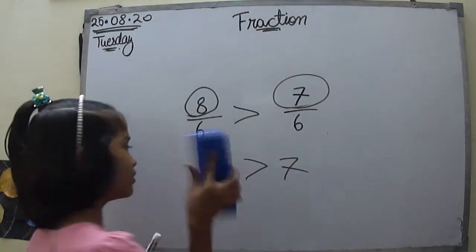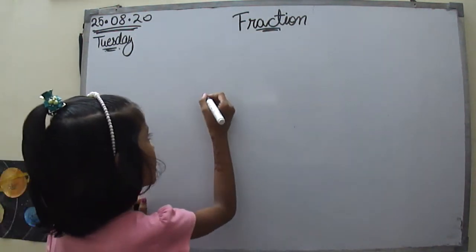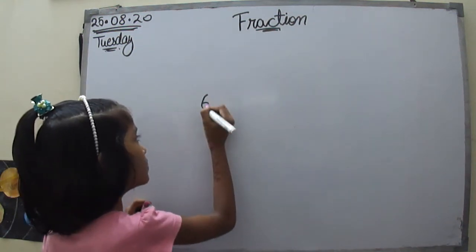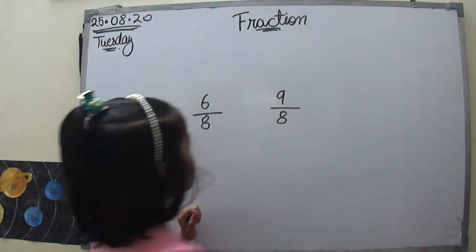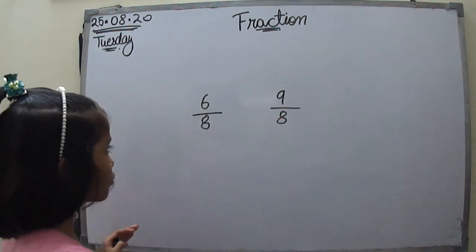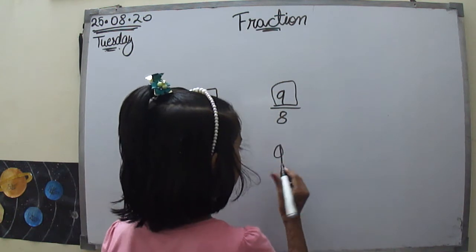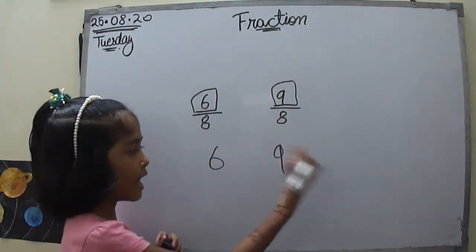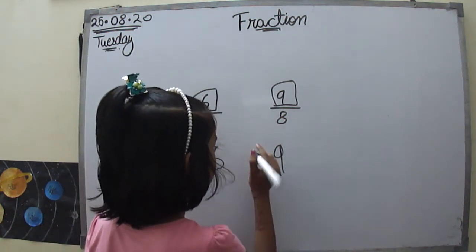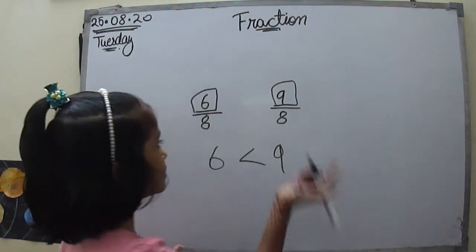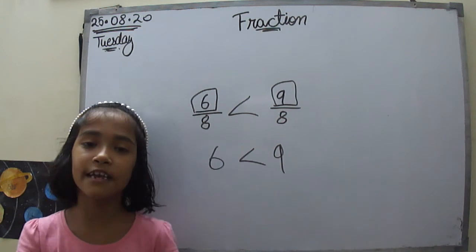Let's move on to another comparison question. We again have like fractions to compare: 6 by 8 and 9 by 8. It is simply easy — we only compare the numerators, 6 and 9. Of course 9 is bigger, so the answer is 9 by 8 is bigger than 6 by 8.